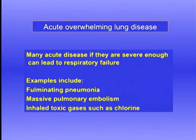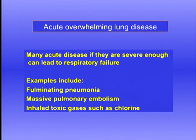Any severe lung disease, if severe enough and overwhelming, can lead to respiratory failure. One example is fulminating pneumonia — an elderly person who hits his chest, cracks a rib, finds breathing painful, may develop pneumonia, and if severe enough, go into respiratory failure. Pneumonia in old people is a relatively common cause of death. Massive pulmonary embolism is another cause: a large embolus in the pulmonary circulation obstructs blood flow, there's a fall in cardiac output, circulatory shock, and these patients go into respiratory failure with quite high mortality.